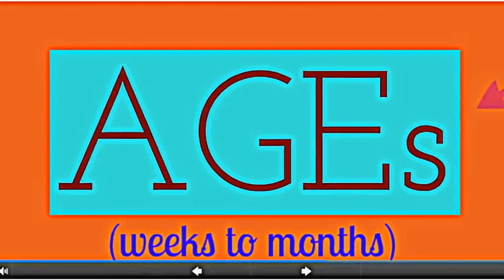AGE formation occurs naturally in the body as a part of the aging process. However, its formation is accelerated in diabetes due to the increased availability of reducing sugars.